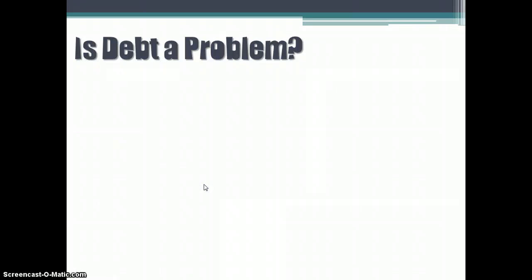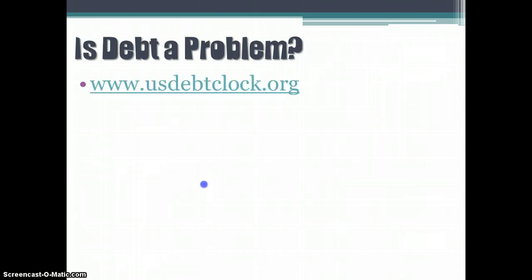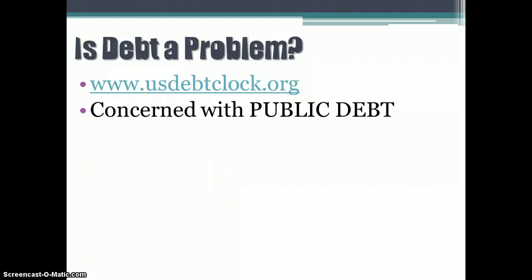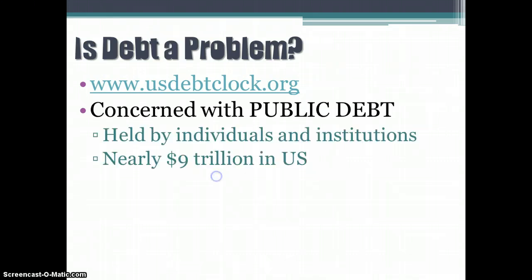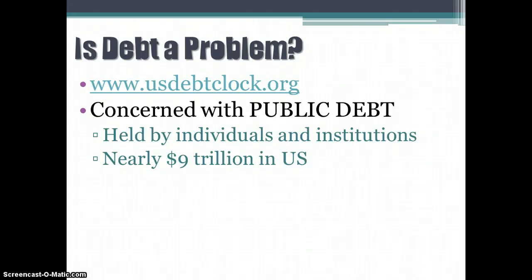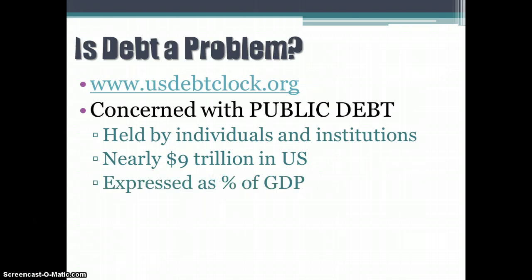The next question is: if we're going to have debt, is debt a problem? Well, maybe. We have a lot of debt — you can check out the U.S. debt clock and see the numbers moving up as we accumulate more debt. When we talk about debt, what we're interested in is public debt — that is, debt held by individuals and institutions in the name of the U.S. government, which is roughly $9 trillion. Usually it's expressed as a percent of GDP, so we talk about how much of our GDP is represented by debt.